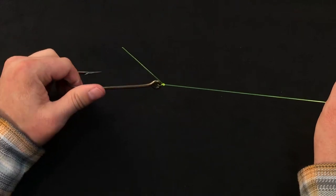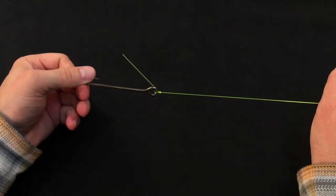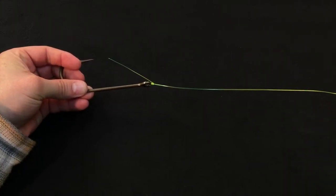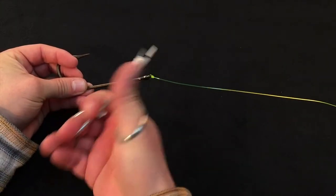With this knot, the tag end doesn't seat like the clinch knot. It doesn't come out at a perfect 90-degree angle. It's going to come out at a slightly wider angle, but that's just fine. I'll clip that nice and tight.